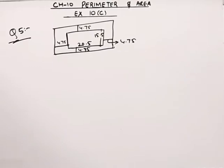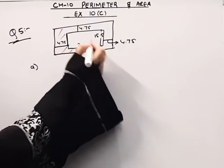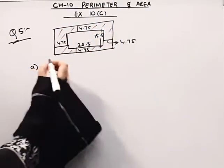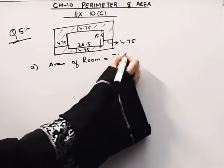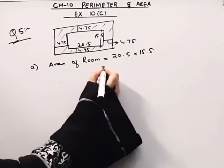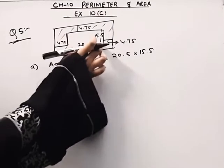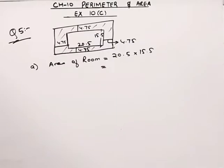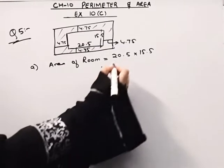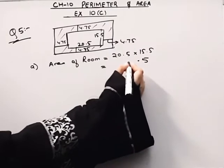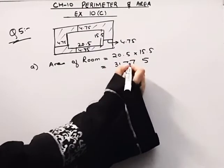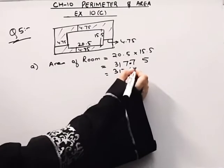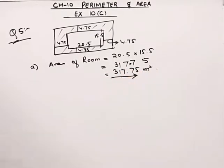In part A, we have to find out the area of the veranda — that space outside the room. So what we'll do here is find the area of the room first. This will be 20.5 into 15.5 — L into B. This comes out to be 317.75 meter square. This is the area of the room.